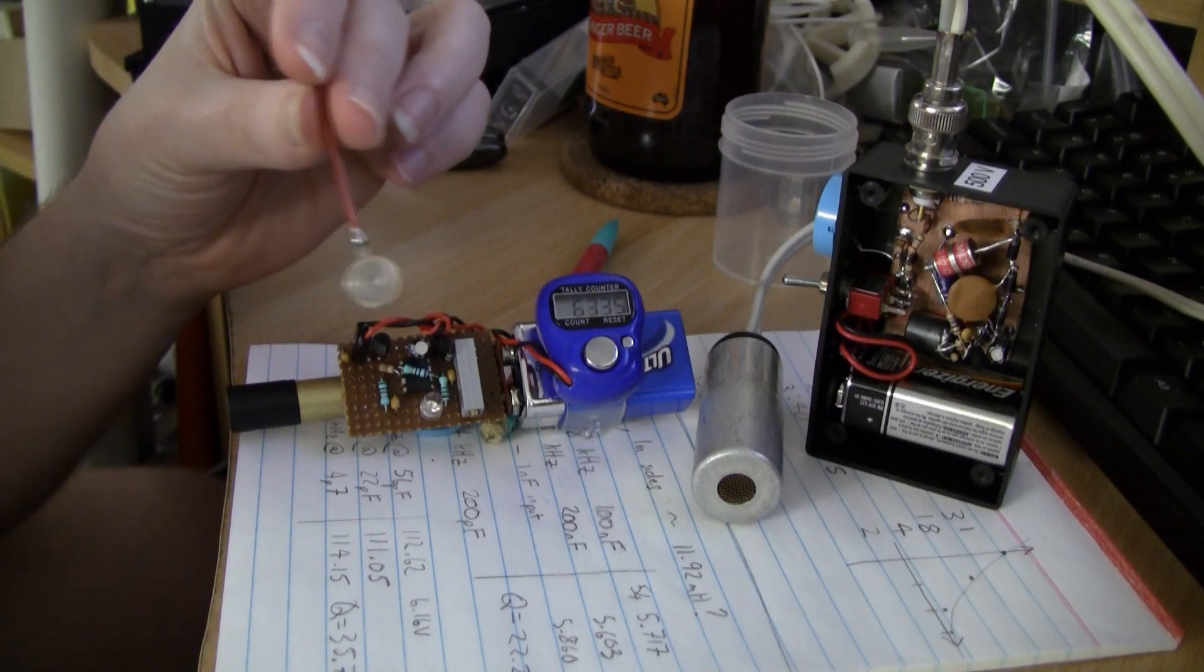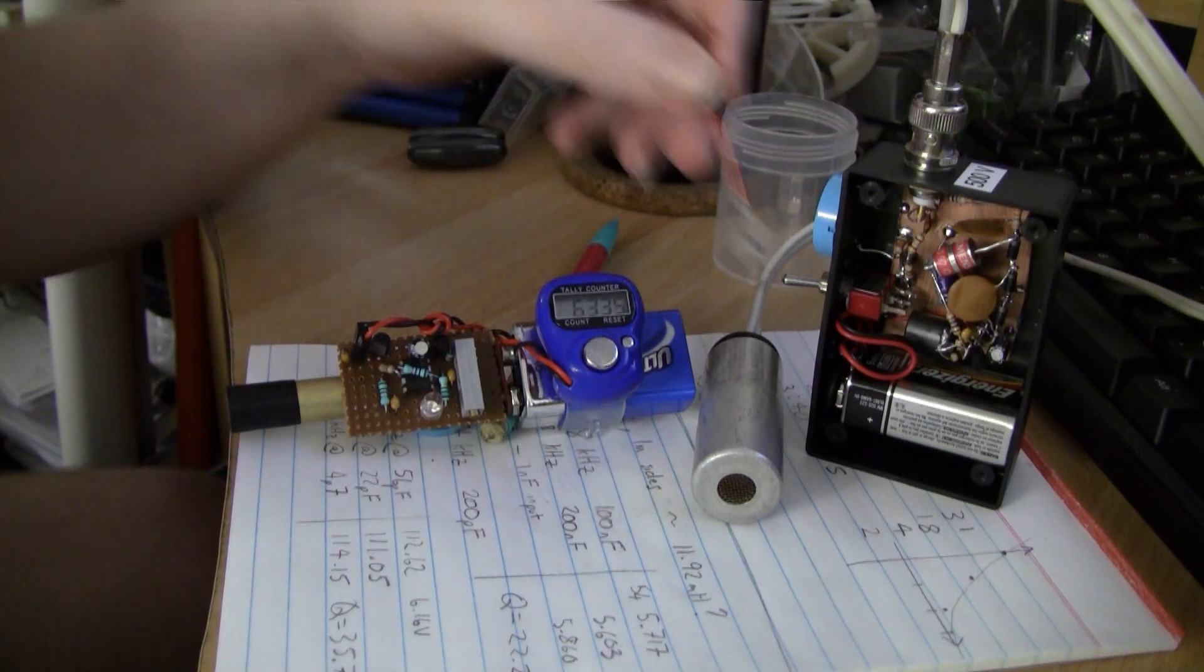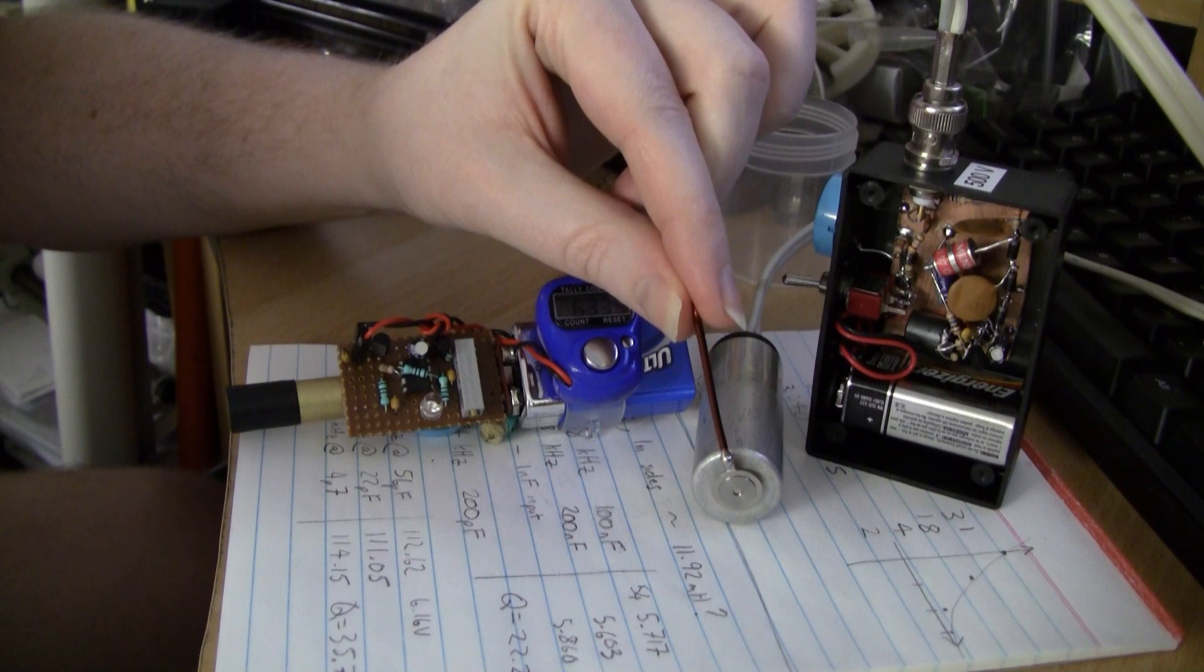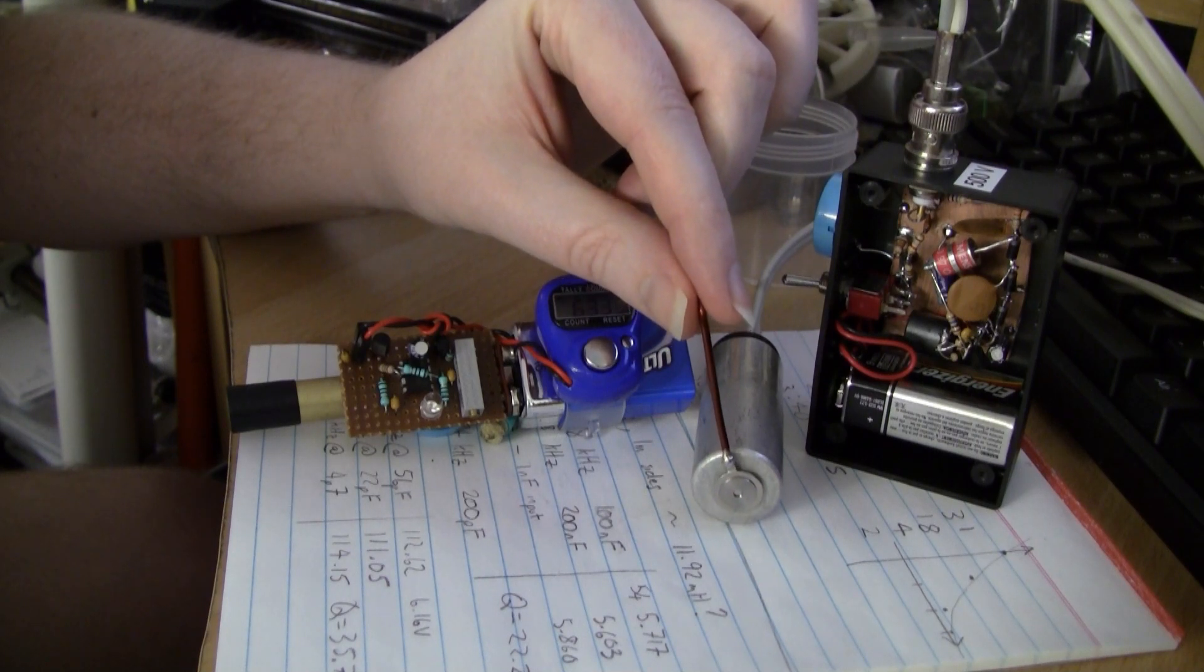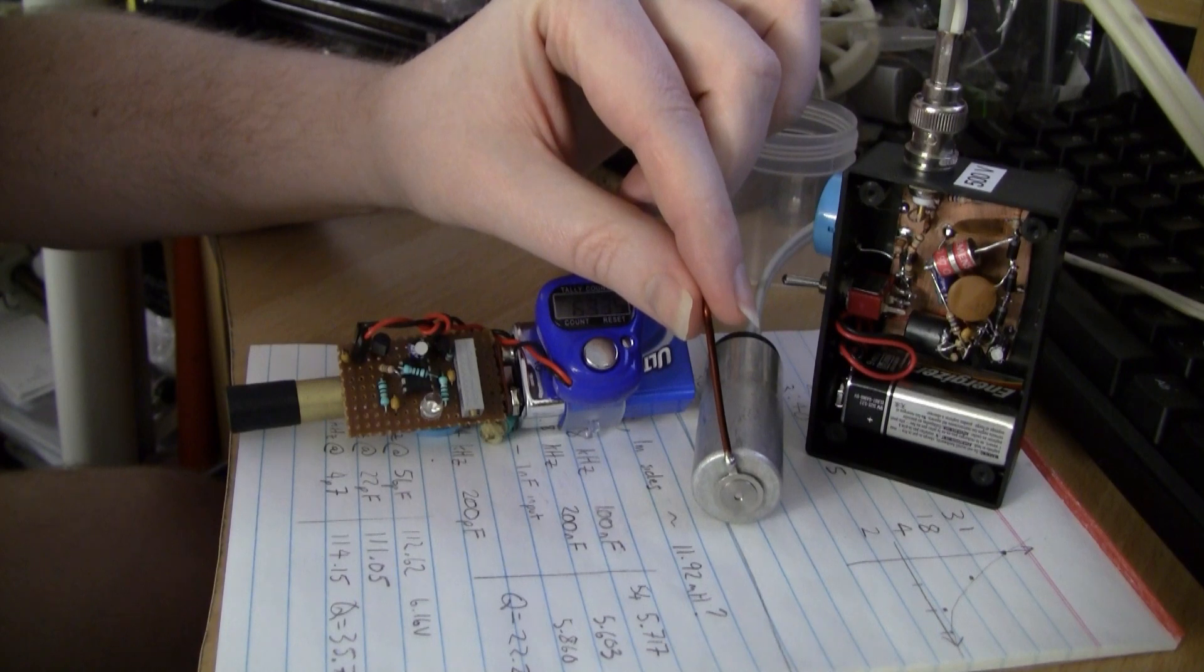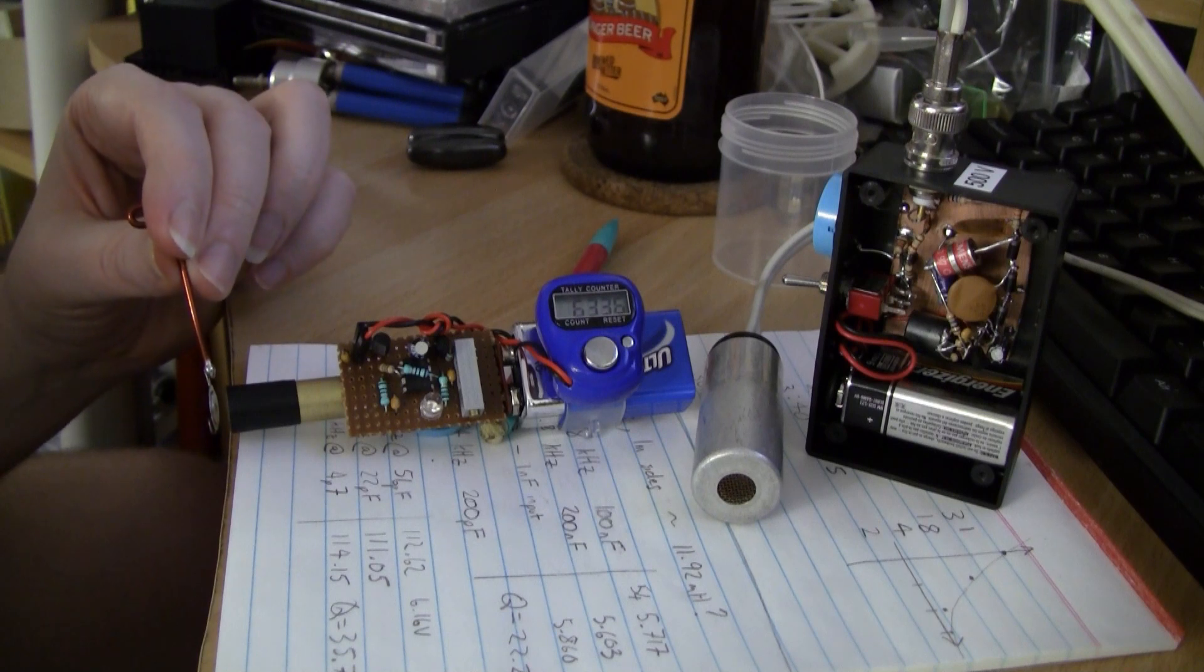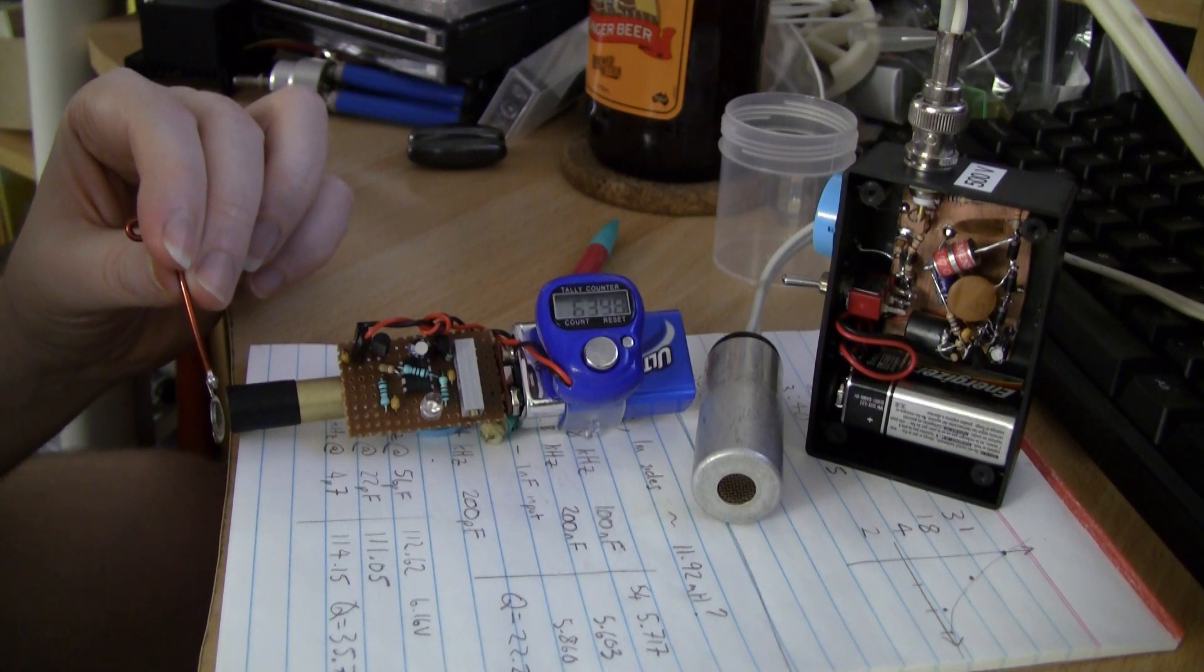Let's start with the americium source. As we know, copious alpha emissions. This is a whole GM tube here, an end window GM tube for comparison purposes. This is the gamma only that's coming out the back of the source. These are about 60 keV gammas. These are just on the edge of what this thing can detect, and it does detect them reasonably well.